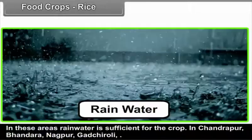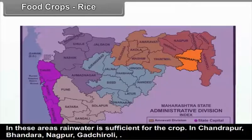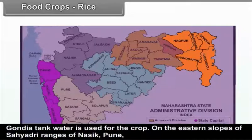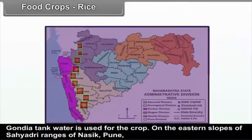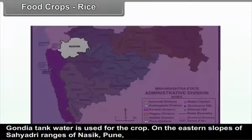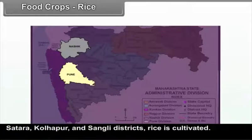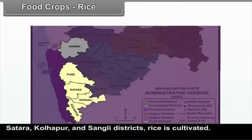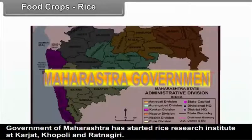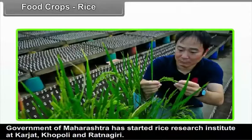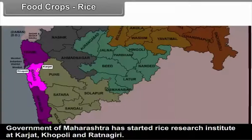In Konkan areas, rainwater is sufficient for the crop. In Chandrapur, Bhandara, Nagpur, Gadchiroli, and Gondiya, tank water is used for the crop. On the eastern slopes of the Sahyadri ranges in Nasik, Pune, Satara, Kolhapur, and Sangli districts, rice is also cultivated. The Government of Maharashtra has started rice research institutes at Karjat, Khopoli, and Ratnagiri.